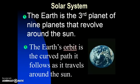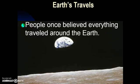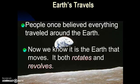That revolution is called an orbit. The Earth's orbit is the curved path that it follows as it travels around the Sun. People once believed that everything traveled around the Earth. Eventually we figured out that that's not true and that we know that the Earth is actually moving and it both rotates and revolves around the Sun along with the other planets.